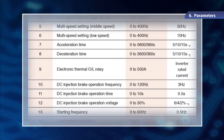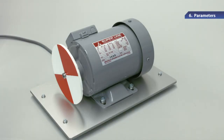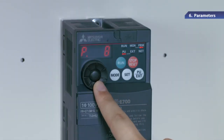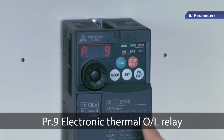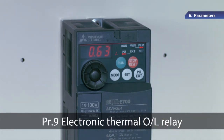First of all, let's set the Rated Motor Current value to protect the motor from overheating due to an overcurrent. The Rated Current value is the specification set to run the motor and is specified on the motor nameplate. To set the value, use parameter number 9, which is for electronic thermal OL relay.